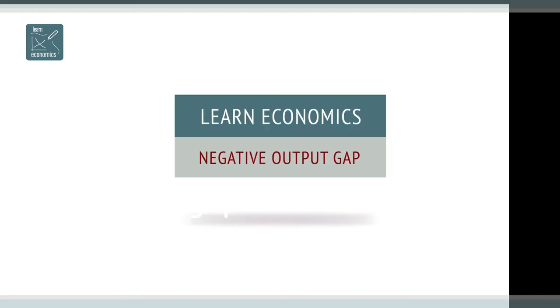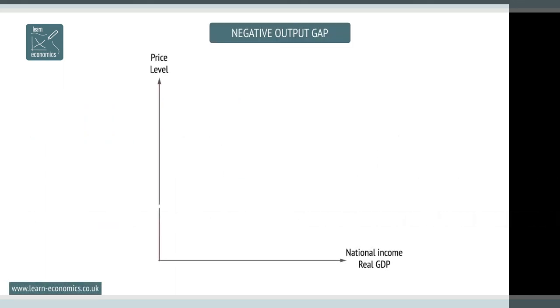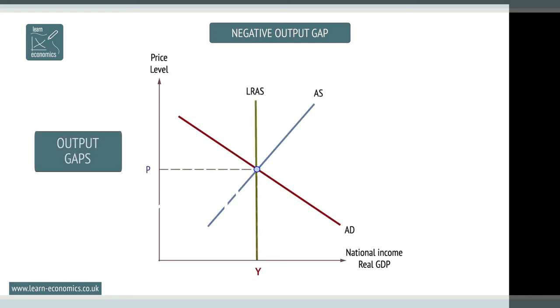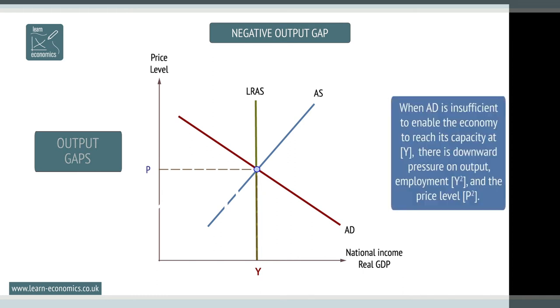A negative output gap exists when actual aggregate demand is below an economy's potential at Y. When AD is insufficient to enable the economy to reach its capacity at Y, there is downward pressure on output, employment at Y2, and the price level at P2.